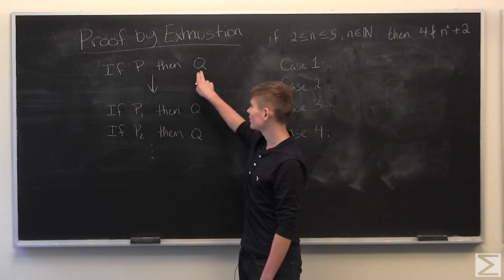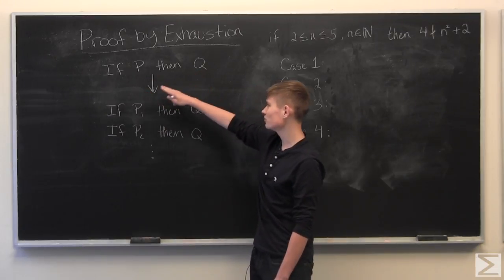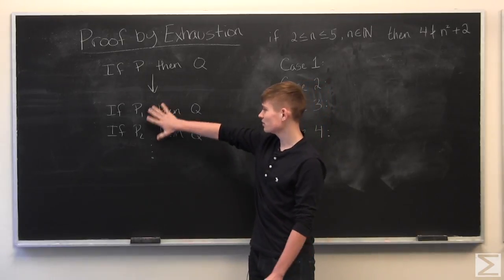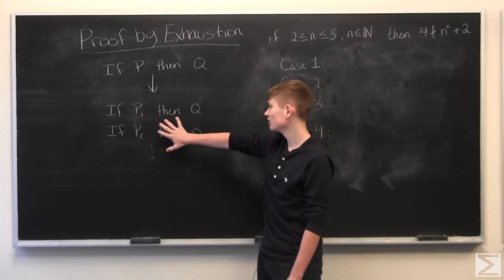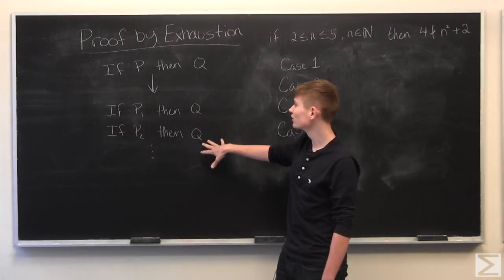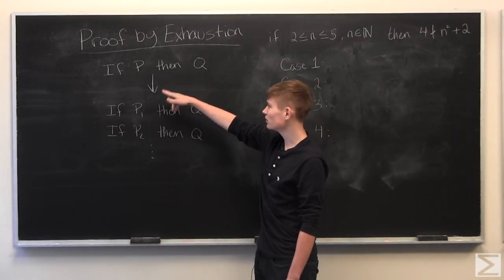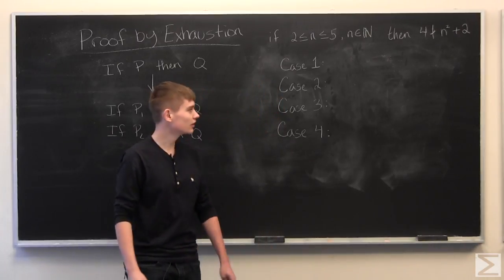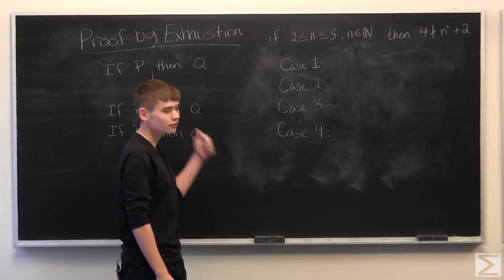If you want to prove that P implies Q, so if P then Q, then proof by exhaustion just means that you break P up into different cases, and then you show that they all lead to Q. And therefore, P will imply Q. So let's get started and start using some proof by exhaustion.